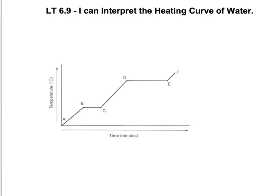Learning target 6.9: I can interpret the heating curve of water. Below is a graph that shows ice turning all the way into steam. But throughout this whole process, we're talking about the same thing — H2O — just in three different phases of matter. It starts off as a solid, as ice, then it melts into water, and then it evaporates into steam. But the whole time, it's still the same substance, H2O.